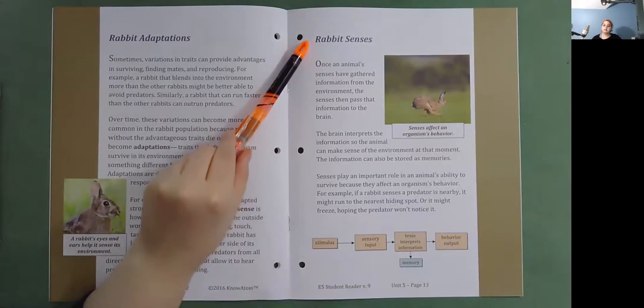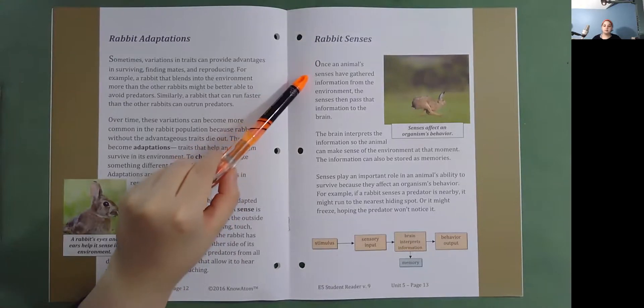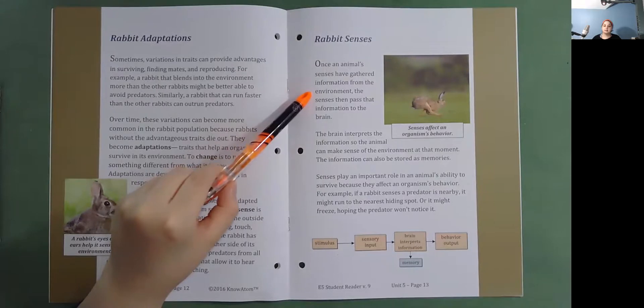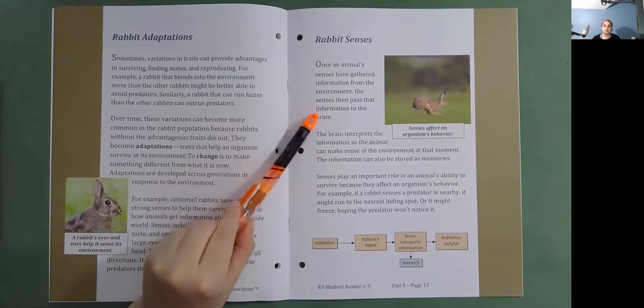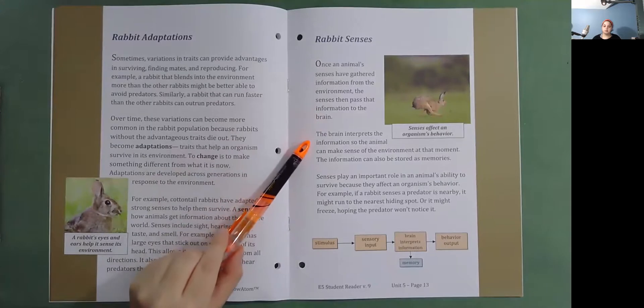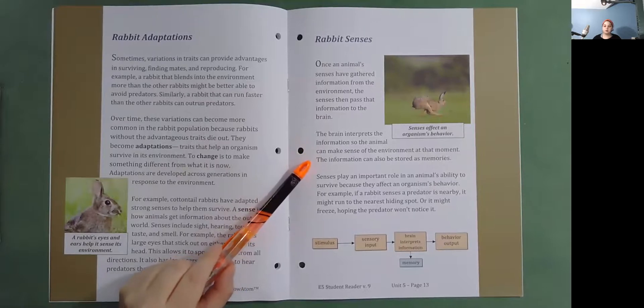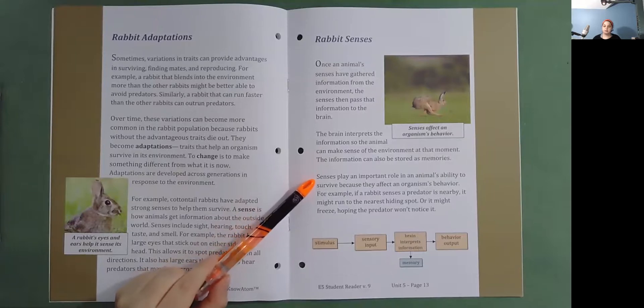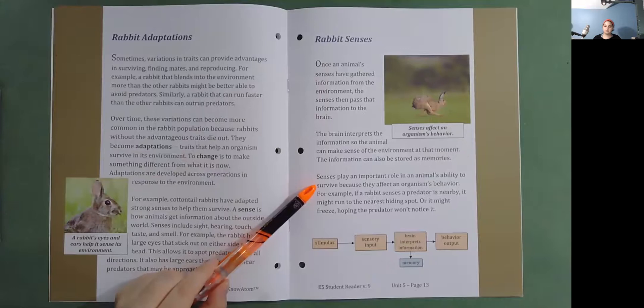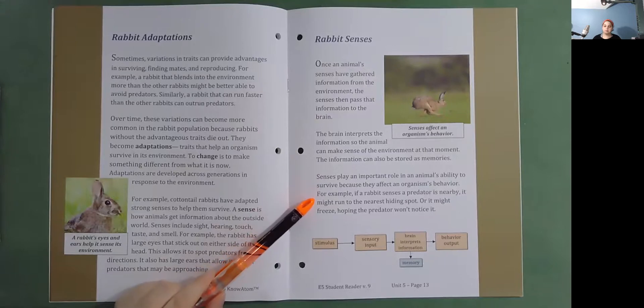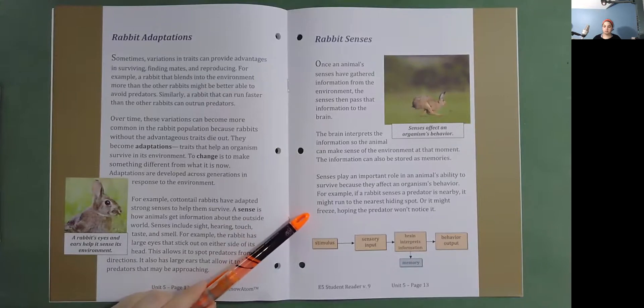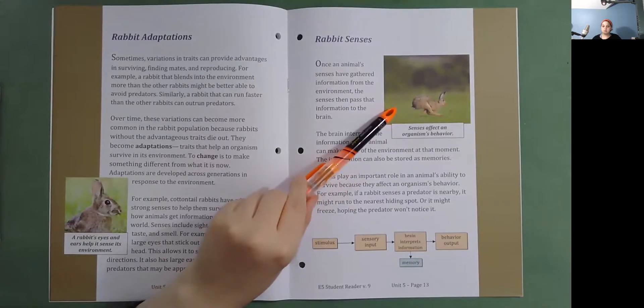Rabbit Senses. Once an animal's senses have gathered information from the environment, the senses then pass that information to the brain. The brain interprets the information so the animal can make sense of the environment at the moment. The information can also be stored as memories. Senses play an important role in an animal's ability to survive because they affect an organism's behavior. For example, if a rabbit senses a predator is nearby, it might run to the nearest hiding spot or it might freeze, hoping the predator won't notice it. Senses affect an organism's behavior.